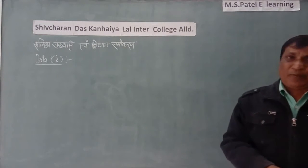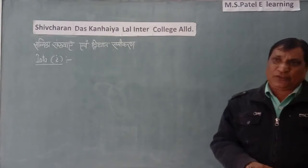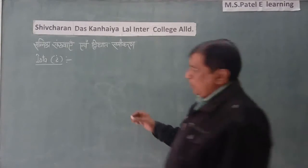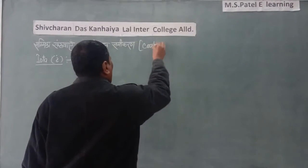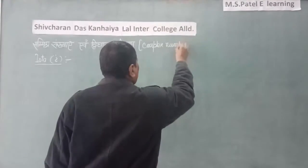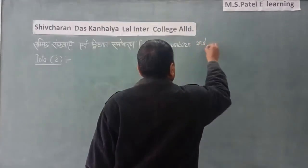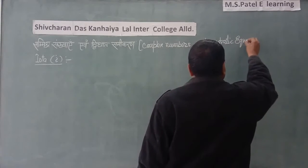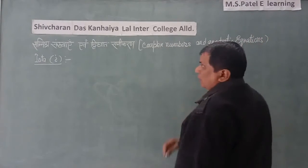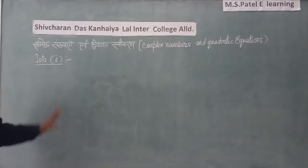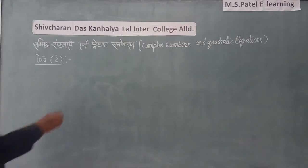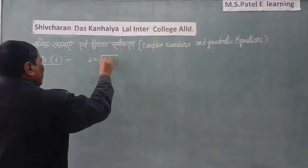The next chapter is Complex Numbers and Quadratic Equations. This is our second chapter — it is a good chapter by name and use.